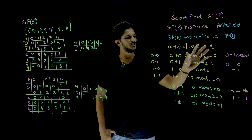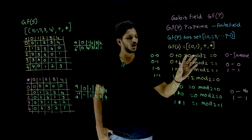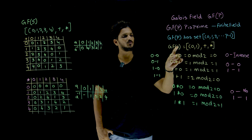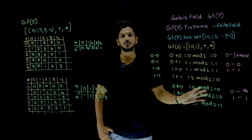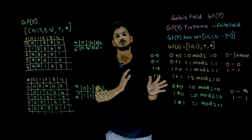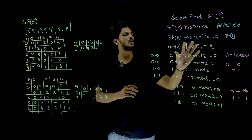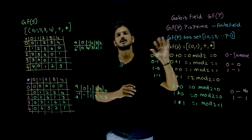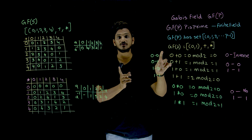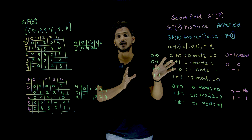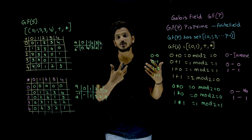So addition modulo p and multiplication modulo p are both satisfying the group properties. That is why we call this a field. And this GF(2) field we are going to use in our cryptography, which we will discuss in our next classes.